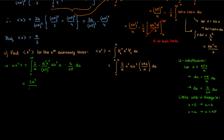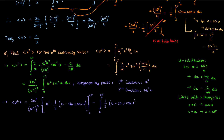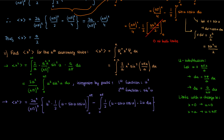I simplify the coefficient and take it outside. Then I use integration by parts again, with first function u² and second function sin²u. This gives u² times the integral of sin²u — which is ½(u − sin u cos u) from equation 1 — minus the integral of that same expression times the derivative of u², which is 2u.